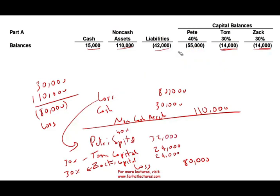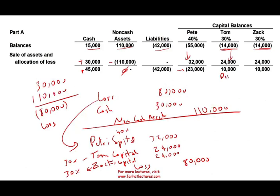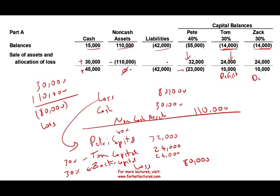Now let's go ahead and allocate. We're going to increase cash by $30,000 and reduce our non-cash assets to zero. We now have cash of $45,000. Our liability is still $42,000. We reduce Pete's balance by $32,000 — still a credit balance. We reduce Tom's balance by $24,000 — Tom now goes into deficit. We reduce Zach's balance — Zach has a deficit as well. They both have deficits. We sold the asset and allocated the loss.